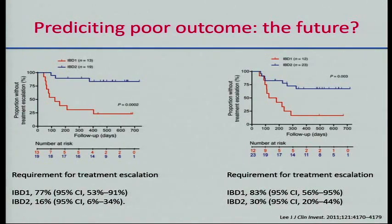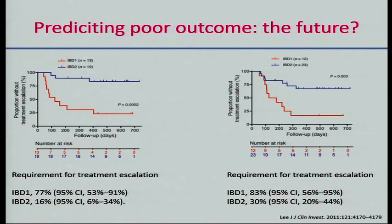Data from James Lee in Cambridge identifies a phenotype based on transcriptomes from CD8-positive T cells, identifying two groups of patients — IBD-1 and IBD-2 cohorts — and looking at their need for escalation of therapy. These sorts of markers are likely in the future to help subdivide people into groups who need more aggressive treatment.